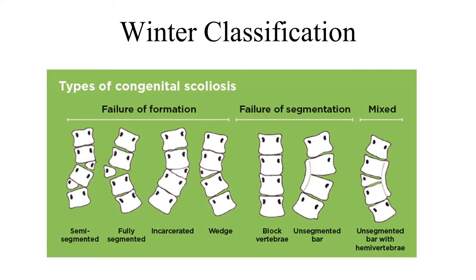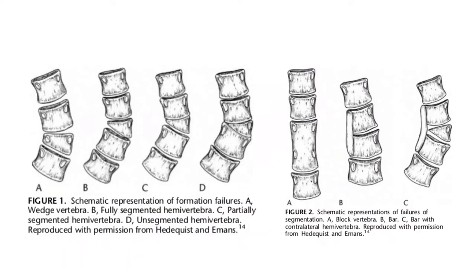The Winter classification is based on embryological classification. There are three main types: formation failures, segmentation failures, and mixed formation and segmentation failures. Different morphologies include hemivertebra, which can have a mobile segment only on one side — called semi-segmented hemivertebra — or one disc above and one disc below, called fully segmented hemivertebra, which has the worst prognosis. Incarcerated vertebra has no discs around it and has a good prognosis.